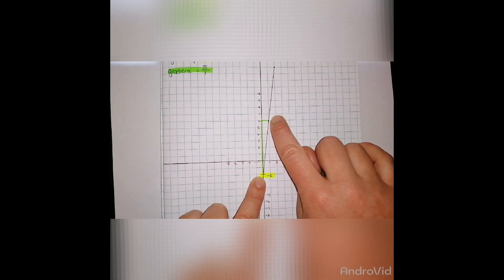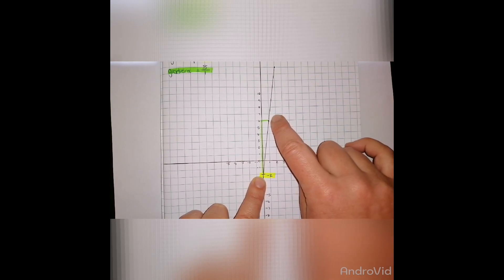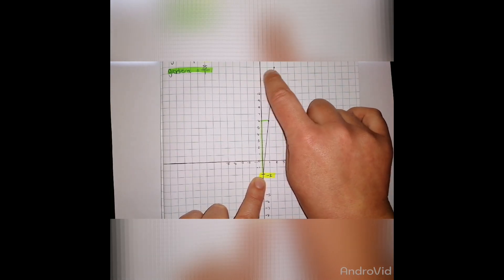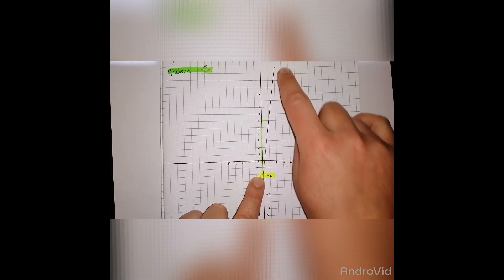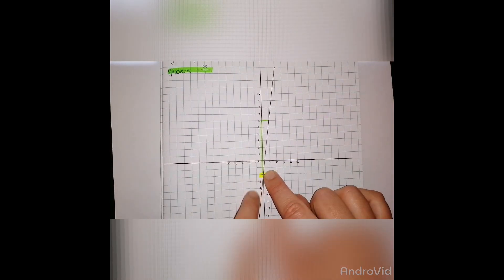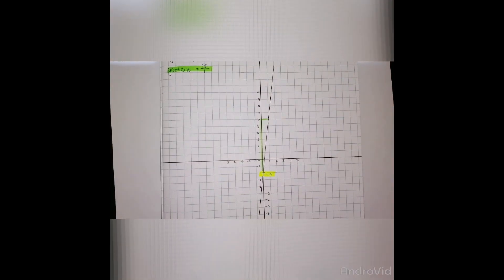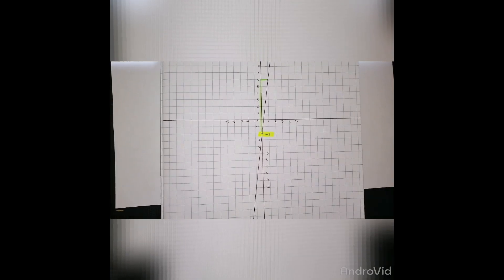From here, I do the exact same thing for the gradient: 8 upwards and 1 out. So I've got three coordinates. Now I need to work downwards as well because the line does not stop at the y-intercept.